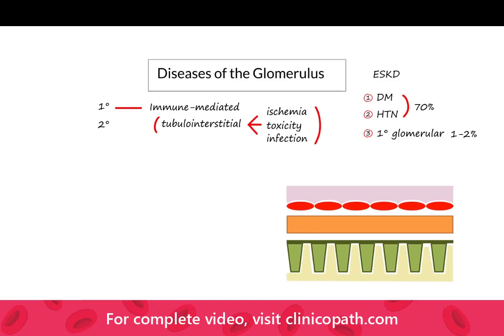There are three basic mechanisms of immune injury. The first to think about is immune complex, which is by far and away the most common. When we talk about immune complex, we want to differentiate between IgG and IgA. Let's start with the immune complexes from IgG.